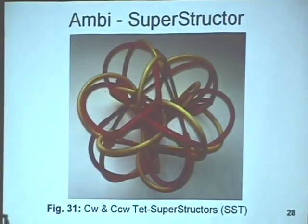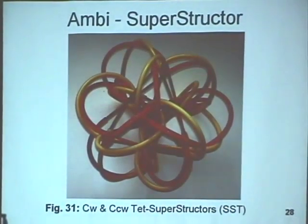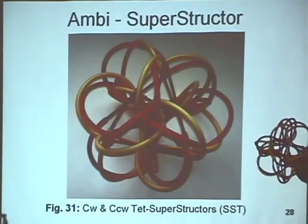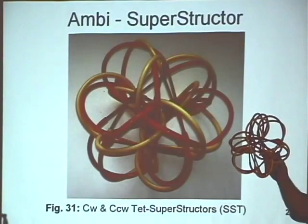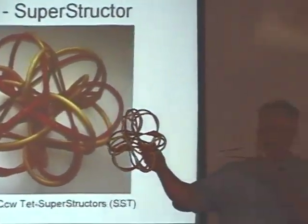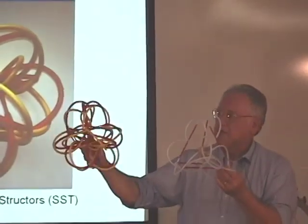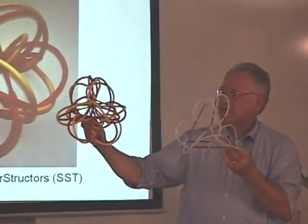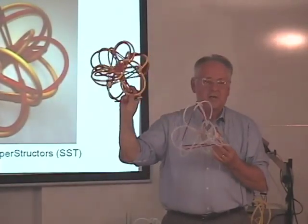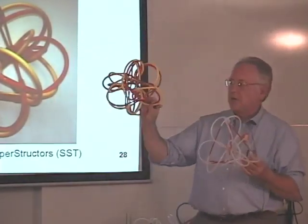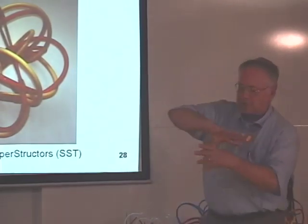Here I've taken one-handedness and put both right-handed and left-handed circuits into the same superstructure pattern to get this form. It gets pretty interesting, and if you study the twists at each vortex, you start to see that at these vortexes